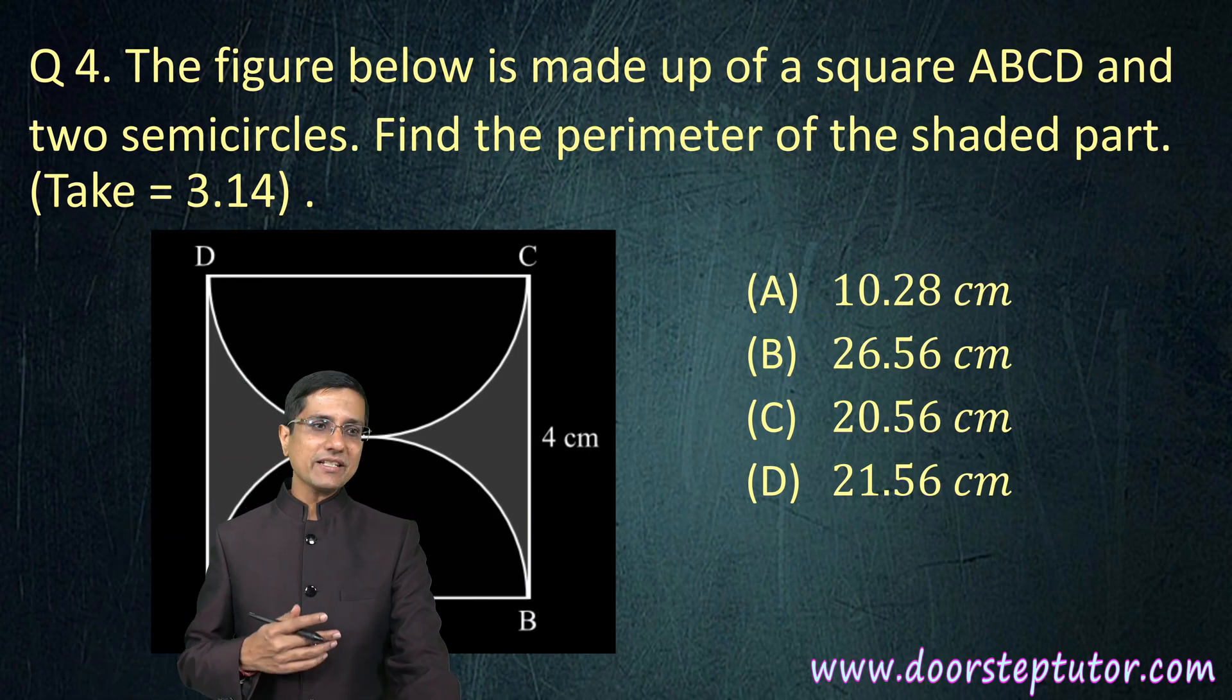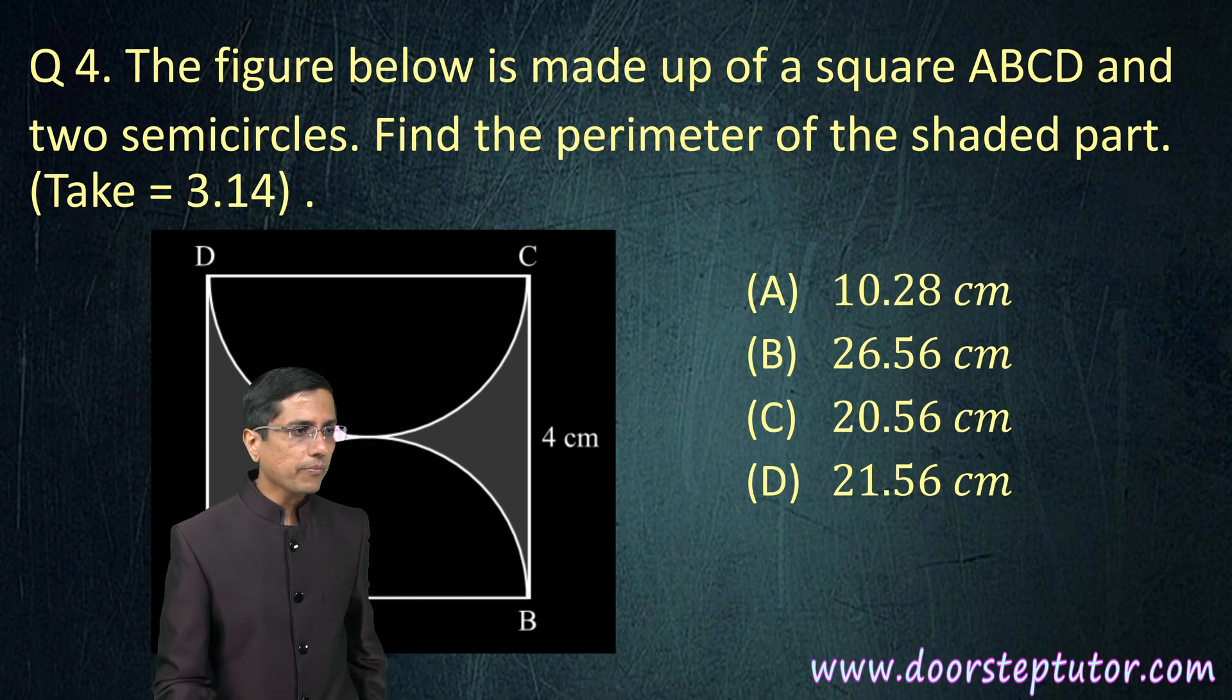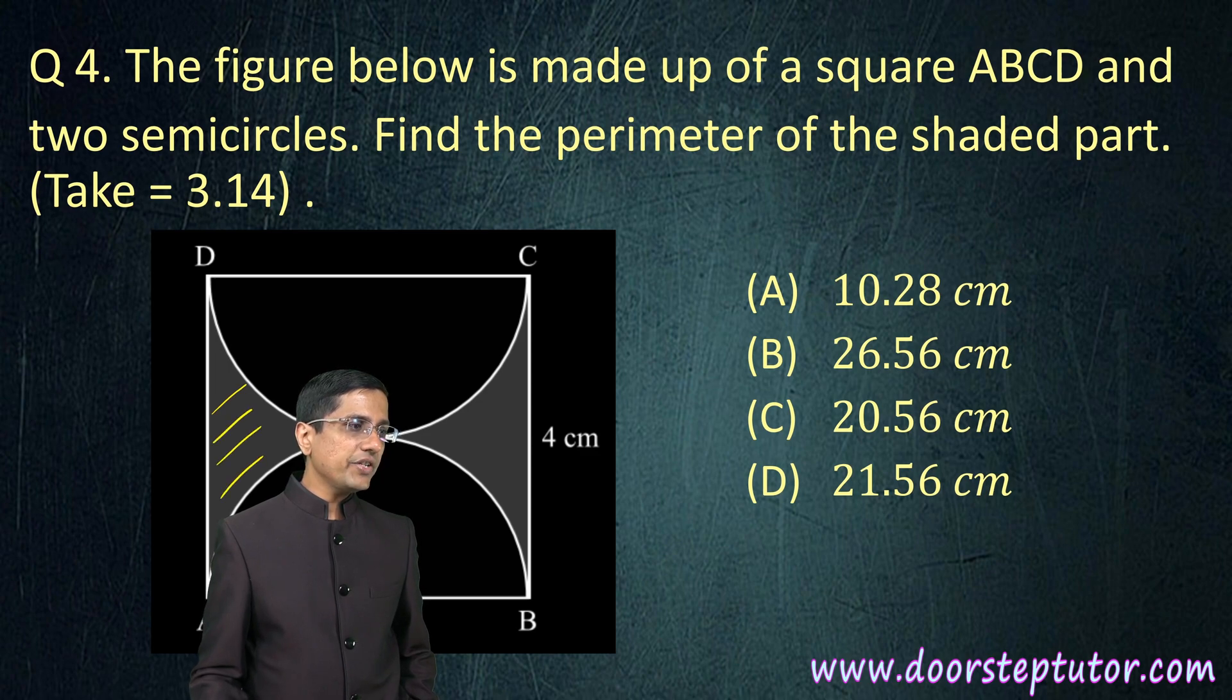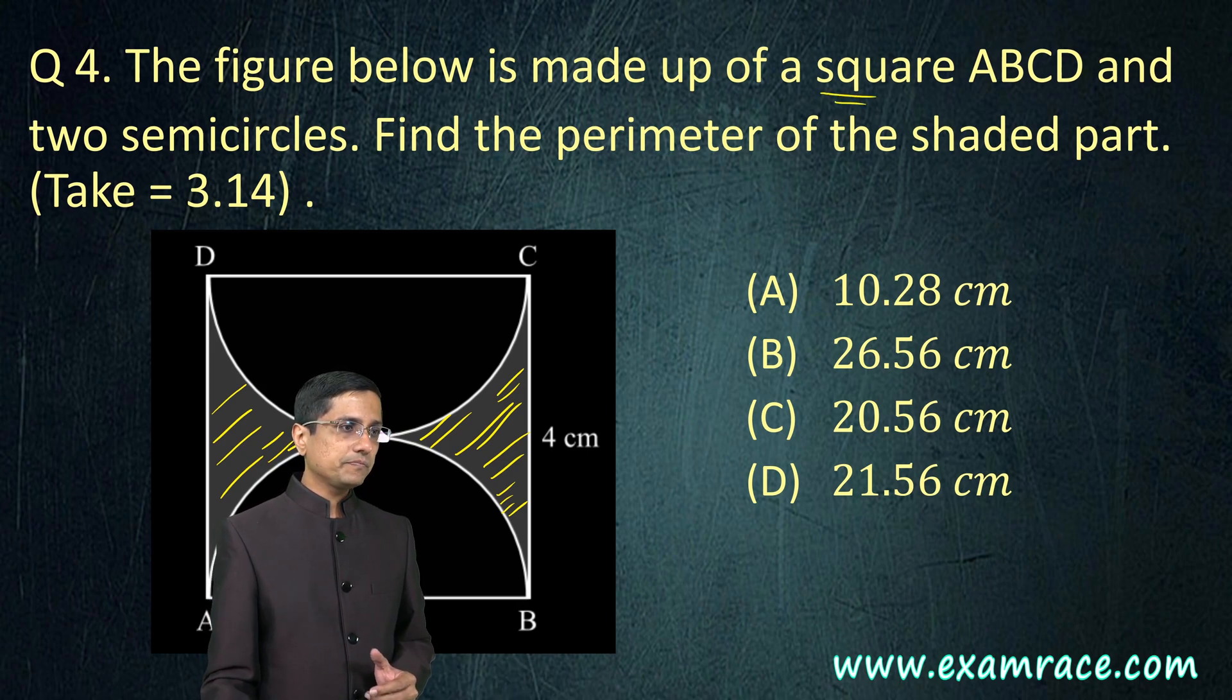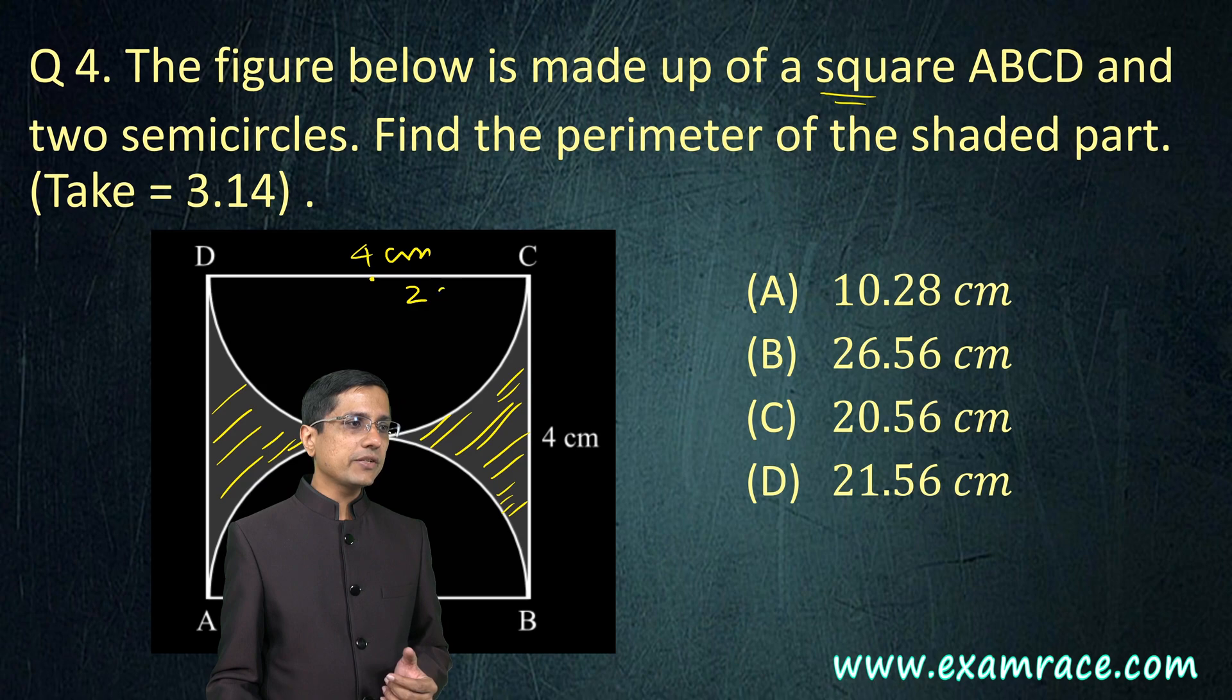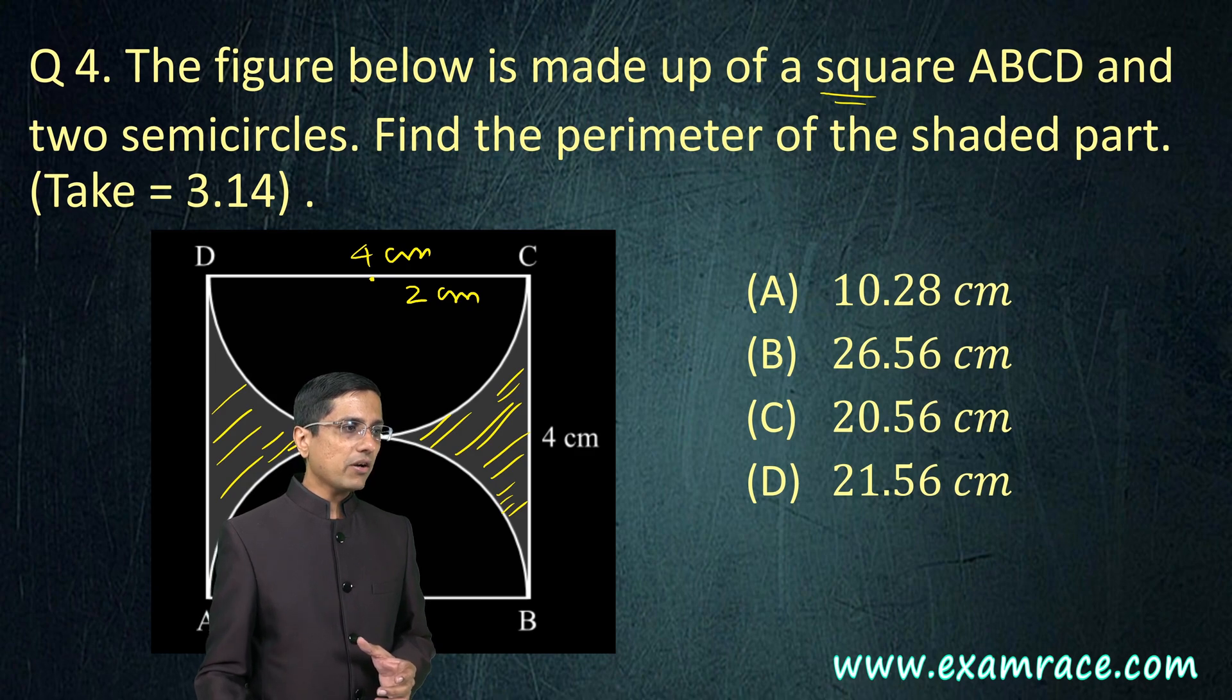Let's move on to the next very important question which is a geometry question. Geometry questions are very frequently asked in IMO or Olympiad examinations. Here we have been given a figure and we are asked to find the perimeter of the shaded region. This is the square ABCD. This is 4 centimeter and this is also 4 centimeters. For this particular semicircle the radius is half of 4 which is 2 centimeter.